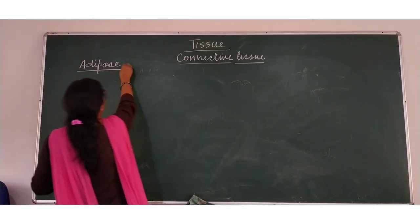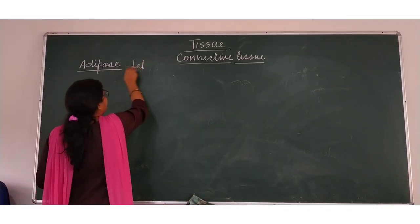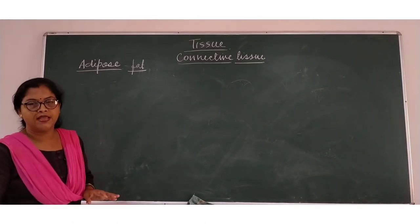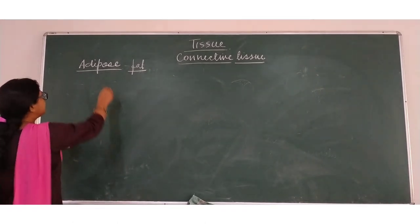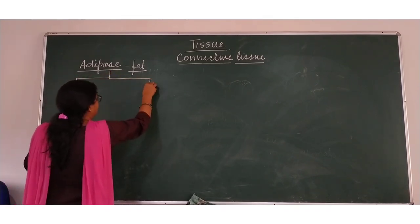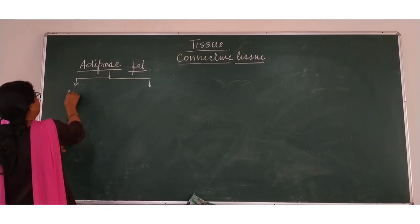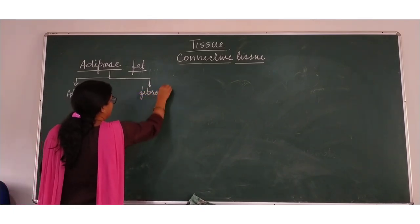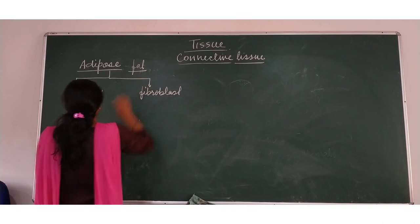Adipose is also known as fat or fatty tissue as it stores fat. It has mainly two types of cells. The first one is called adipocytes and the another one is called fibroblast.